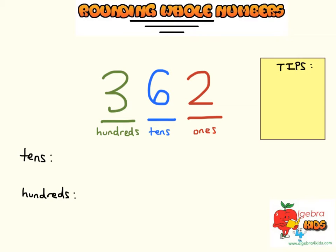Hey guys! Let's talk about rounding whole numbers. For this example, we need to look at the number 362 based on its place values, and we're going to round it, because we want to get a number that ends with 0. What we look at is what place we want to round to.